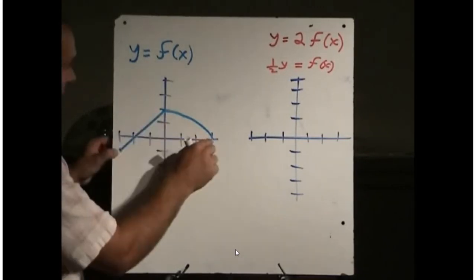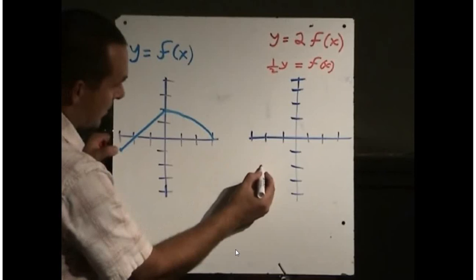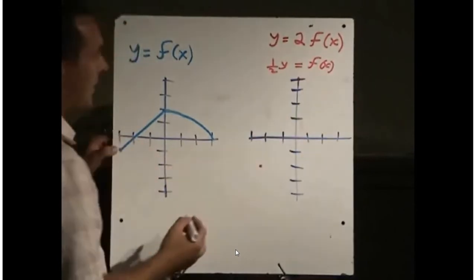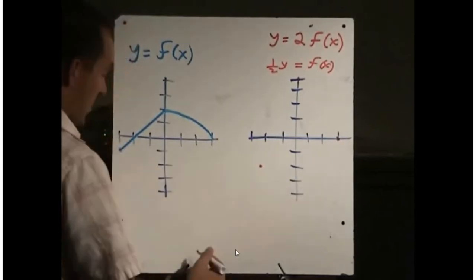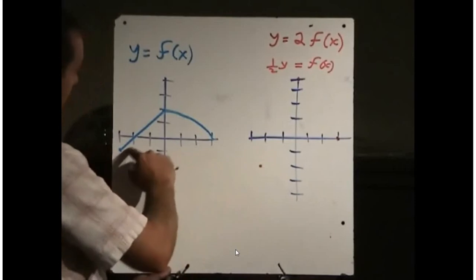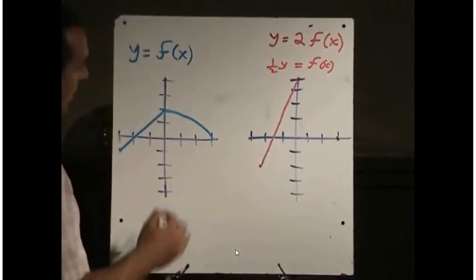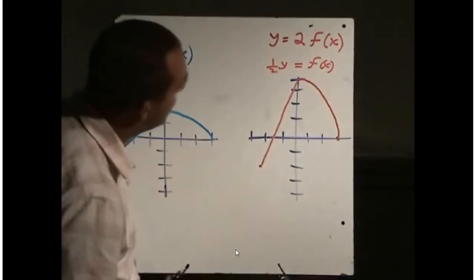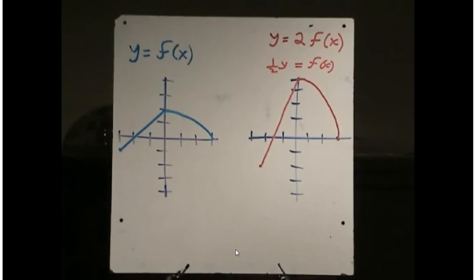I've got three key points. The y value of negative 1 doubled becomes negative 2. The y value of 2 doubled becomes 4. The y value of 0 doubled stays at 0. Now I connect the dots — a straight line between those two points, and a smooth curve between the others. This graph is the same as the original except it's been vertically expanded by a factor of 2; all y values were doubled.